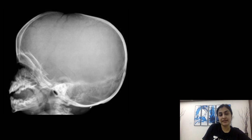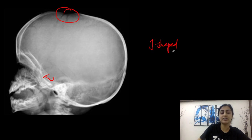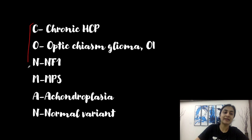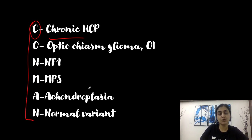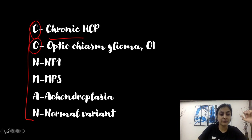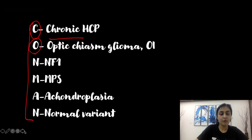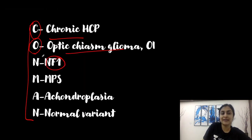This is the skull of a baby — the anterior fontanel is not yet fused. We see a J-shaped sella. The differentials for J-shaped sella can be remembered by the mnemonic CONMAN: C = chronic hydrocephalus (raised ICP depressing the sella); O = optic chiasma glioma producing a large tumor enlarging the sella; N = NF1 association; M = mucopolysaccharidosis (MPS); A = achondroplasia; N = normal variant in 5% of adults.